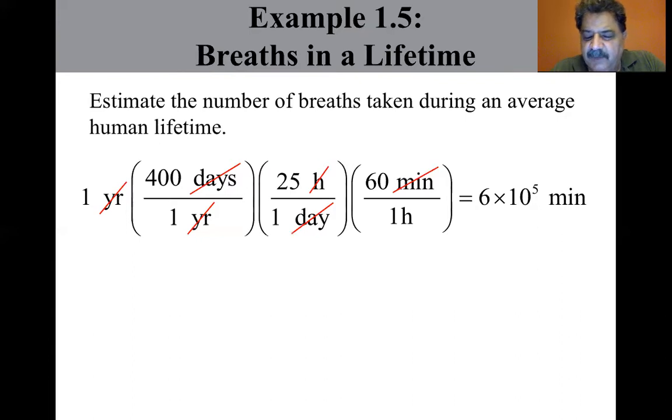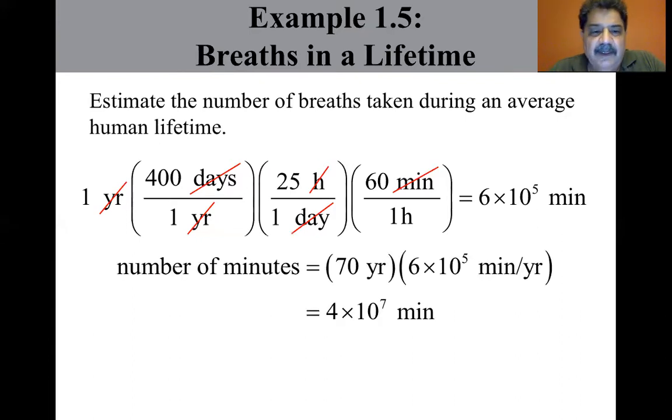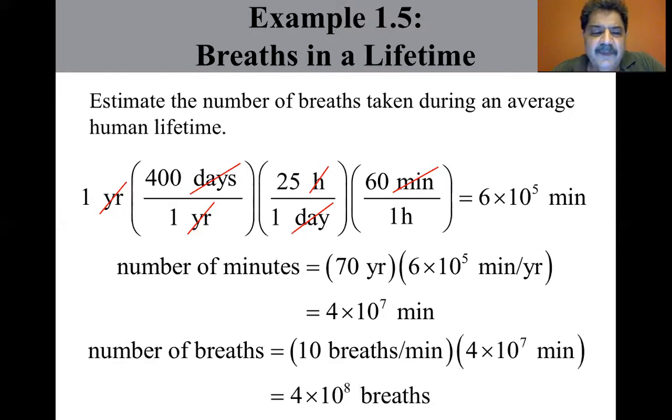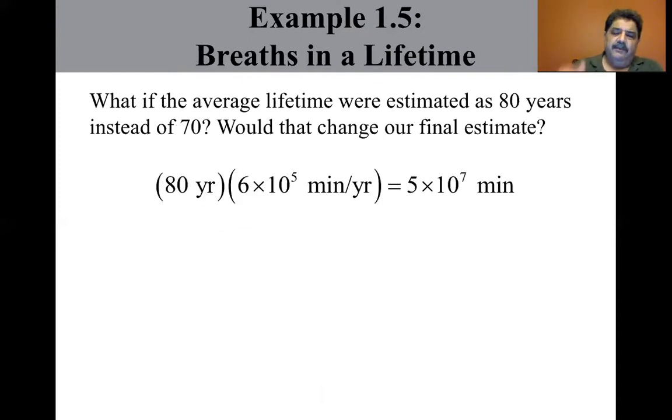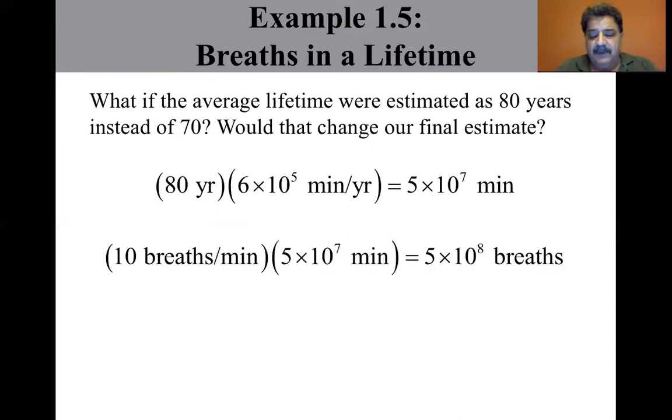Now, find the approximate number of minutes in a 70-year lifetime. So the number of minutes, 70 times six times 10 to the fifth minutes per year, you get four times 10 to the seven minutes. Find the approximate number of breaths in a lifetime. So you guess 10 breaths per minute times four times 10 to the seven minutes, you get four times 10 to the eighth breaths. Since four is greater than 3.162, we bump it up. So therefore, a person takes on the order of 10 to the ninth breaths in a lifetime.